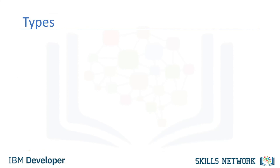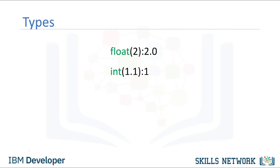You can change the type of the expression in Python — this is called typecasting. You can convert an int to a float. For example, you can cast the integer 2 to a float 2. Nothing really changes. If you cast a float to an integer, you must be careful. For example, if you cast the float 1.1 to 1, you will lose some information.